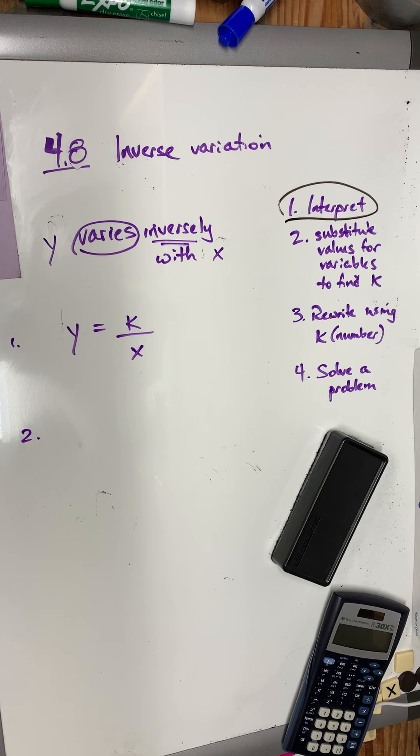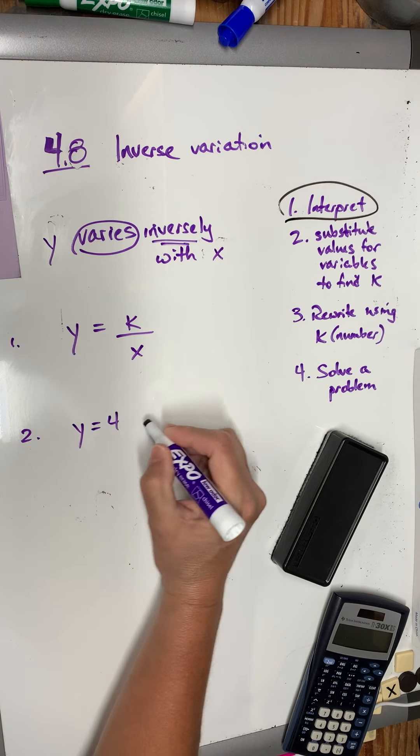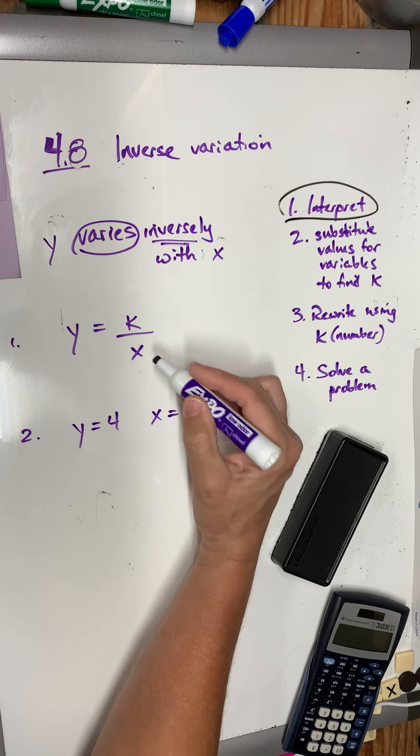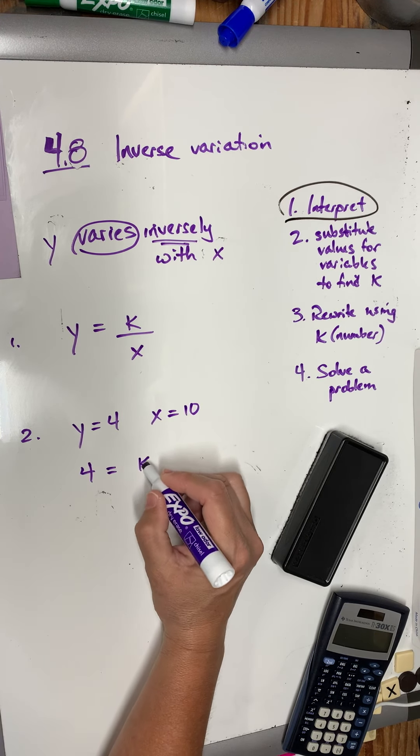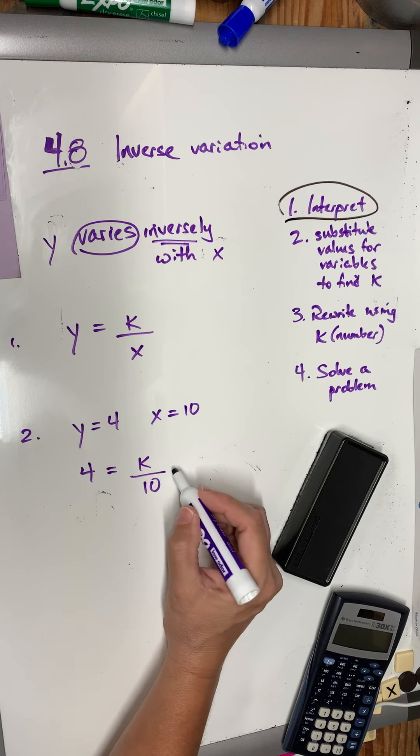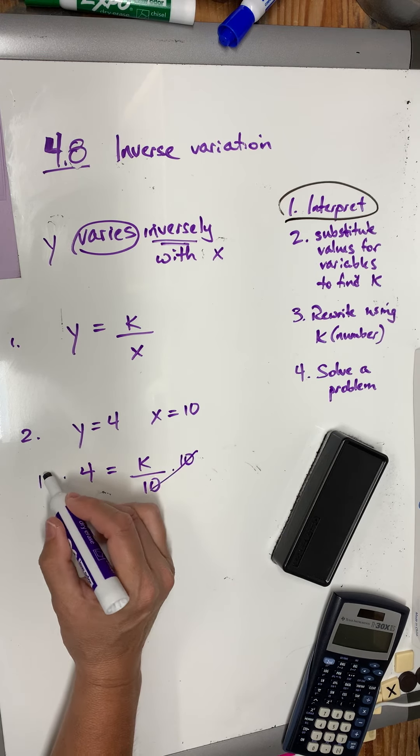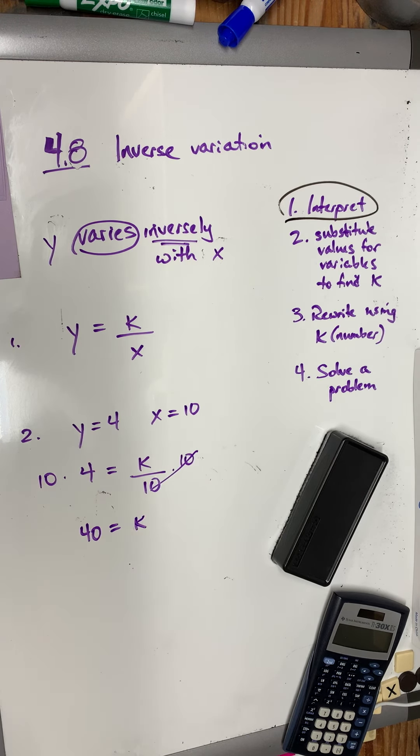Step 2, they tell me that y is 4 when x is 10. y is 4 when x is 10. So, these are temporary values for x and y. So, if I substitute those in, y is 4, x is 10. Then, I would multiply to get k is 40. So, that's step 2.